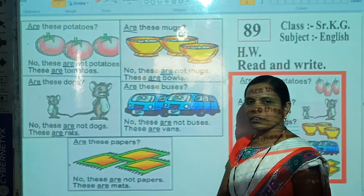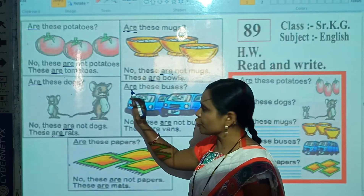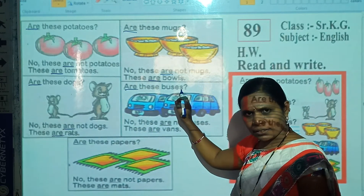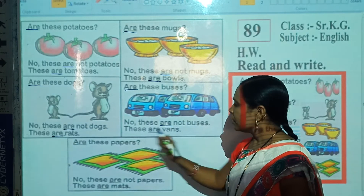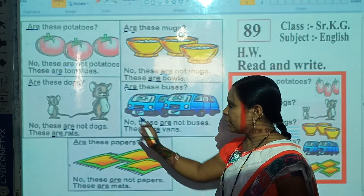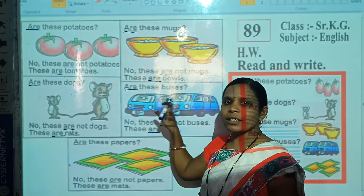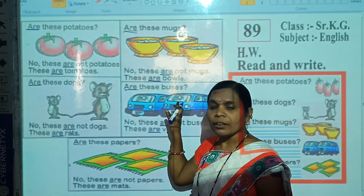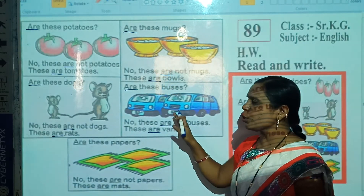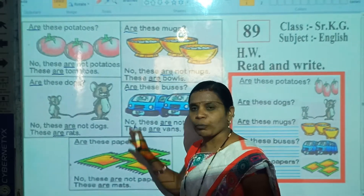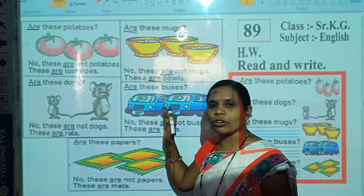Now look here. Which picture is this? Correct, this is the picture of fans. Now read this question: Are these buses? No, these are not buses. These are fans. When we ask a question about these objects, we use 'are'. And when we reply about these objects, we also use 'are'. Both times we use 'are', because here are more than one object or many objects.